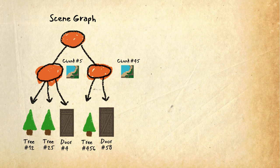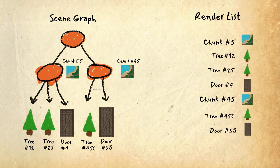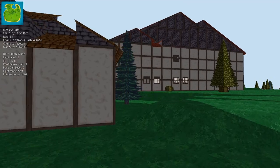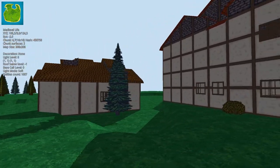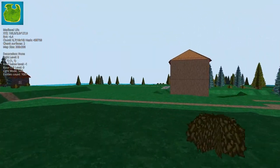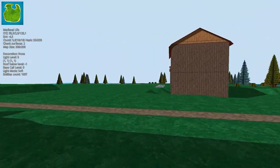A technique to optimize this is to have a separate list with only the things that can be drawn on the screen. Each time a new thing is added to the graph, you add it to that list, and every time a thing is removed, you remove it from the list. This is super quick because the operation is done only when you add or remove things from the scene and not in every frame. Then you can use this list to draw all things in the scene.